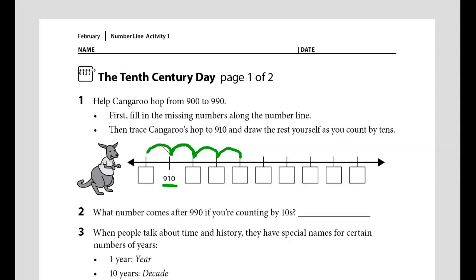Number two says what number comes after nine hundred ninety if you're counting by tens. Write the answer on the line.